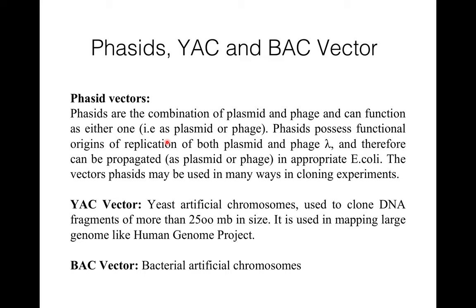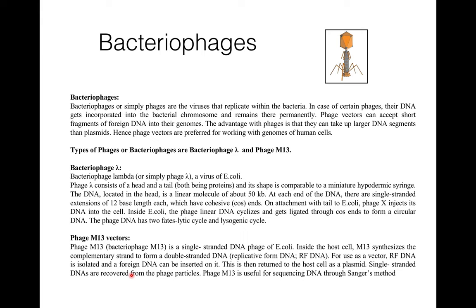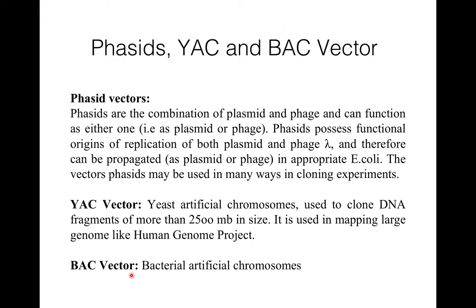YAC vectors — Yeast Artificial Chromosomes — are used to clone DNA fragments of more than 2500 kb in size, and they are used in mapping large genomes such as the Human Genome Project. BAC vectors — Bacterial Artificial Chromosomes — are also used as cloning vectors for large DNA fragments.